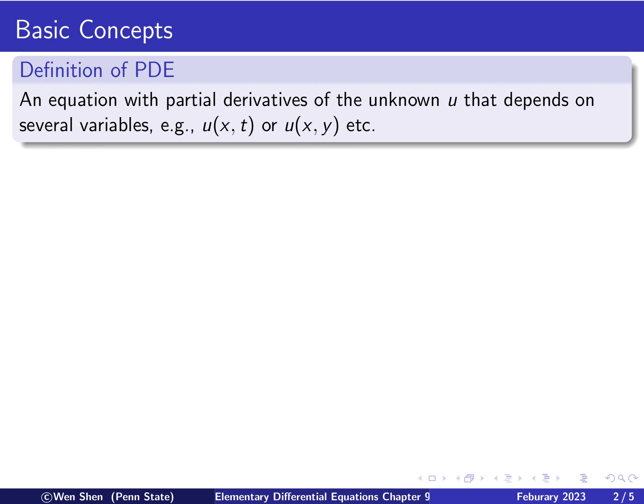And then of course you can have three dimensions, x, y, and z. And you can also depend on t, so x, y, z, and t, depending on the model you have.